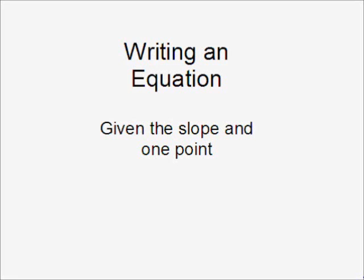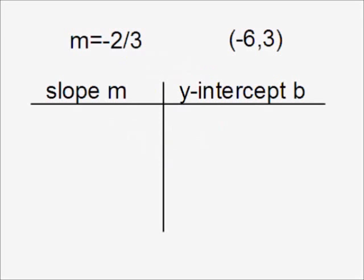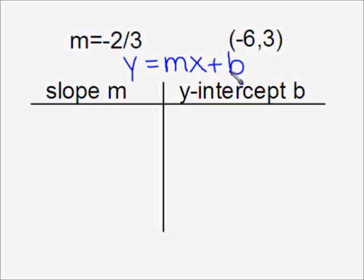The next lesson is on writing an equation given the slope and one point. Suppose I want to write the equation of the line with slope of negative two-thirds and containing the point negative six, three. Our slope-intercept form of a line tells us that y is equal to the slope times x plus our y-intercept. Our equation demands that we know the slope and the y-intercept before we write our equation.